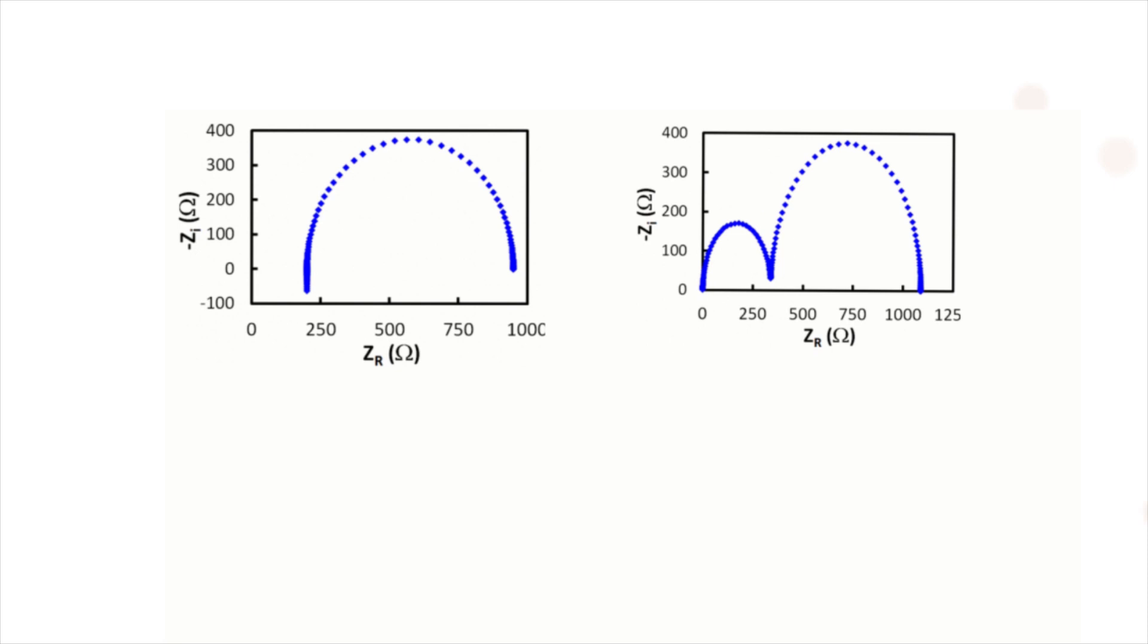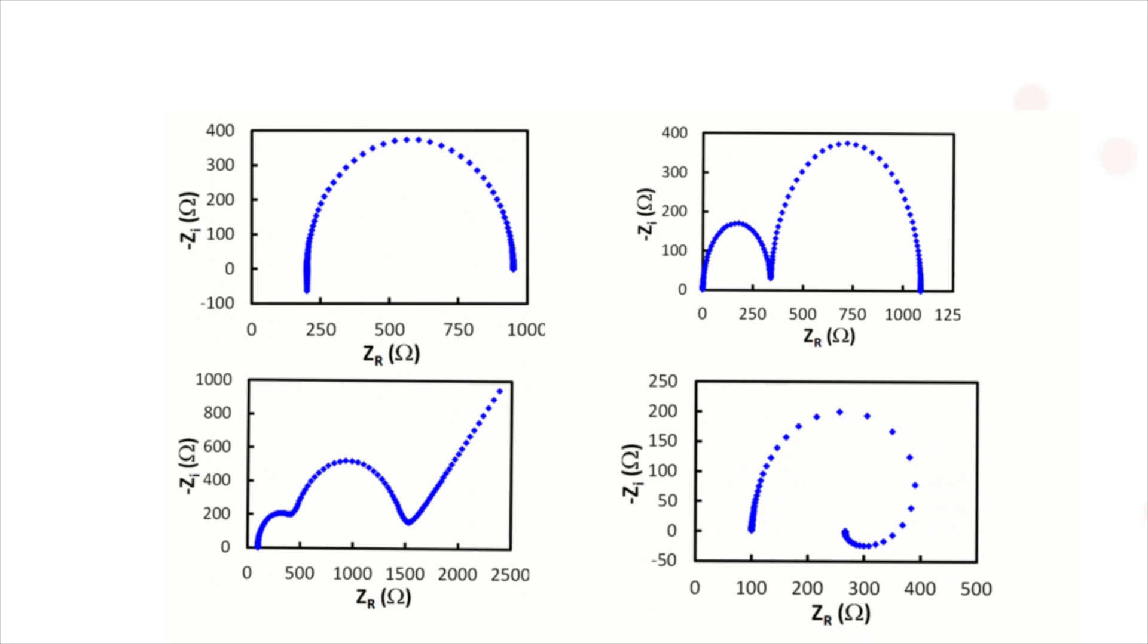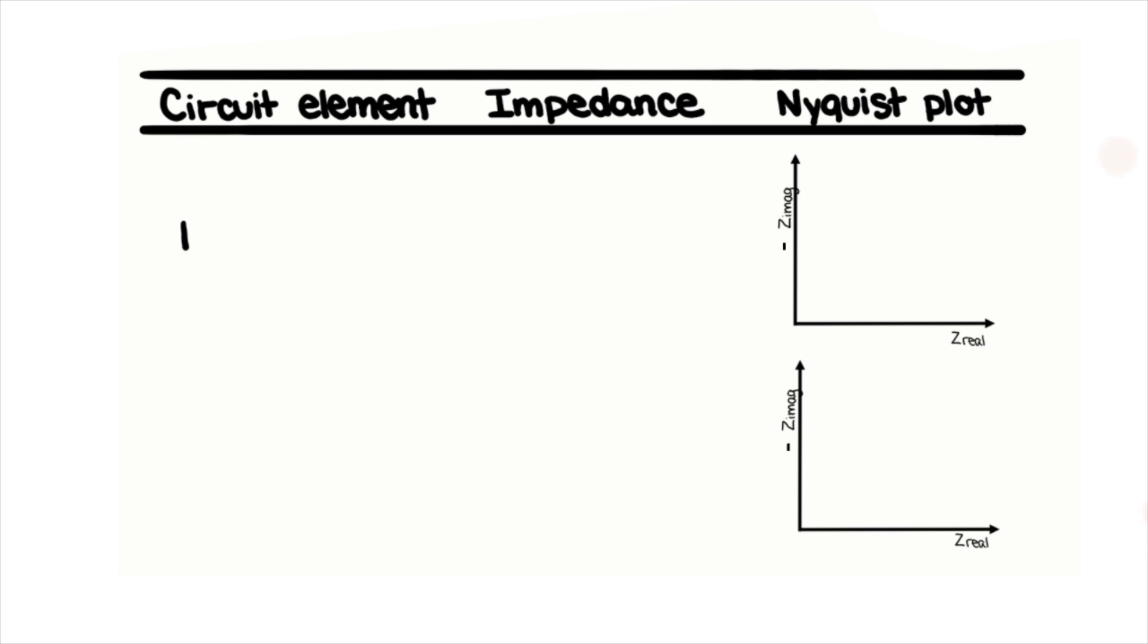Nyquist plots have many useful shapes that can be translated into equivalent circuit elements, which are very useful for analyzing equivalent circuit models, but they don't explicitly show the frequency of each point.